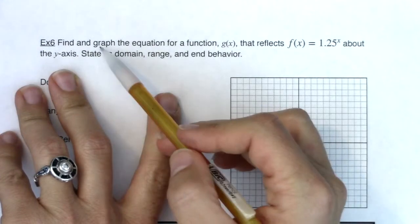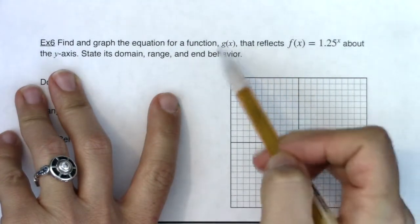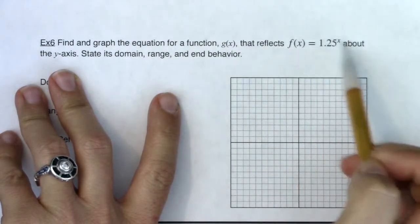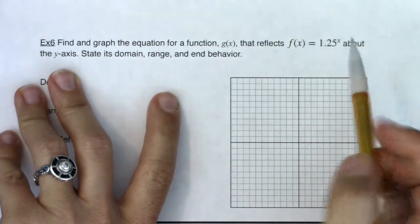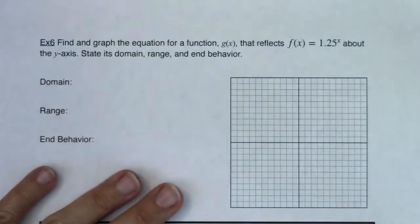So I need to find this equation and graph this equation, and it's this new function g(x), and I basically need to reflect this graph about the y-axis. Taking a look at this, I see that's exponential growth, and I say growth, I say exponential because the variable's up in the exponent.